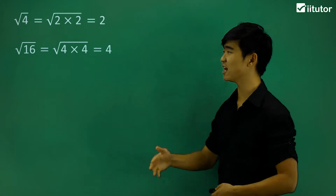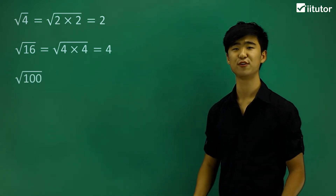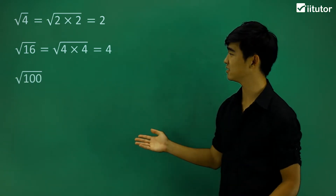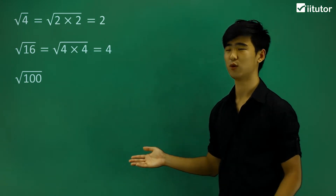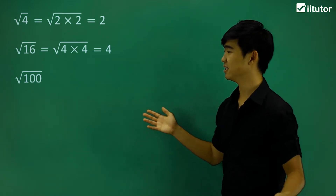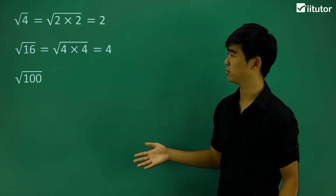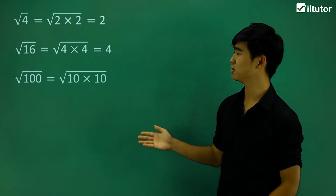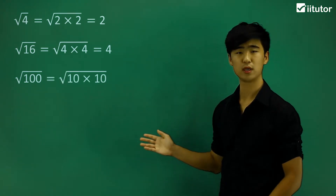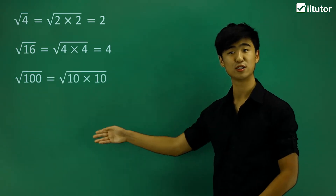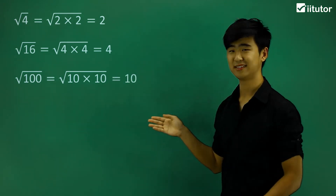This is how the square root operates. Now if we take a look at the next example, the square root of 100. Now 100 is simply enough just another square number. We can break it down into 10 times 10. Now we can cancel out the square root sign, and we're left with just 10.